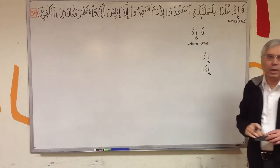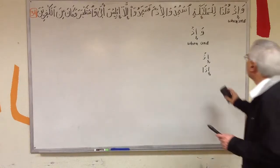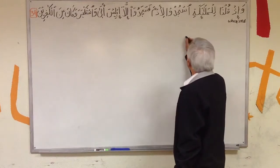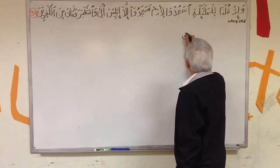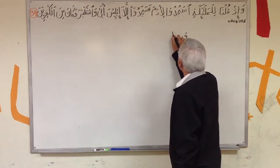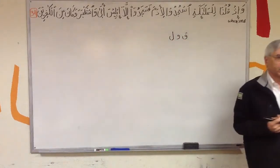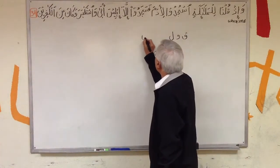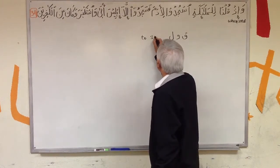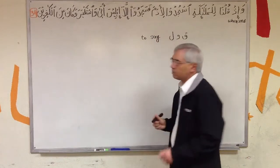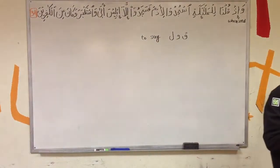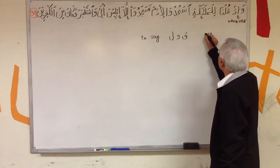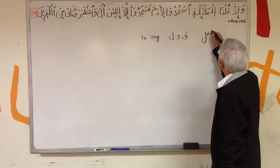The next word is Qulna. The word Qulna starts with three root letters belonging to the group we call fa'ala. The root letters are qaf, waw, and lam. We have seen many words that start with these root letters. This means 'to say'. These three letters belong to the fa'ala group.